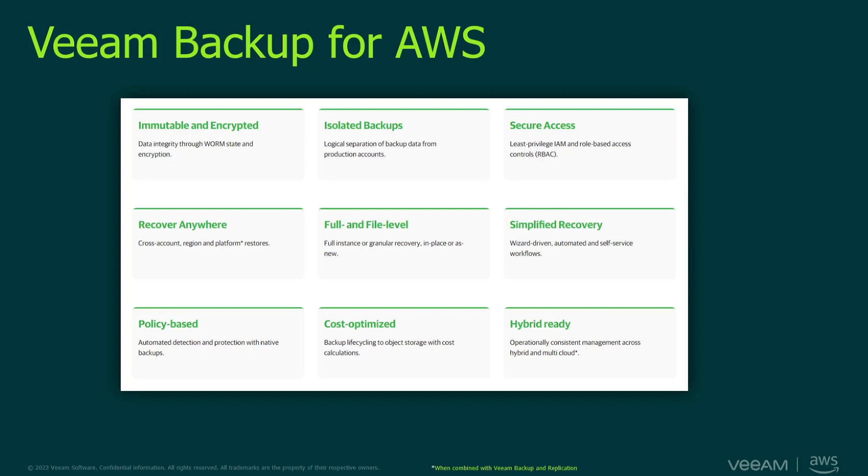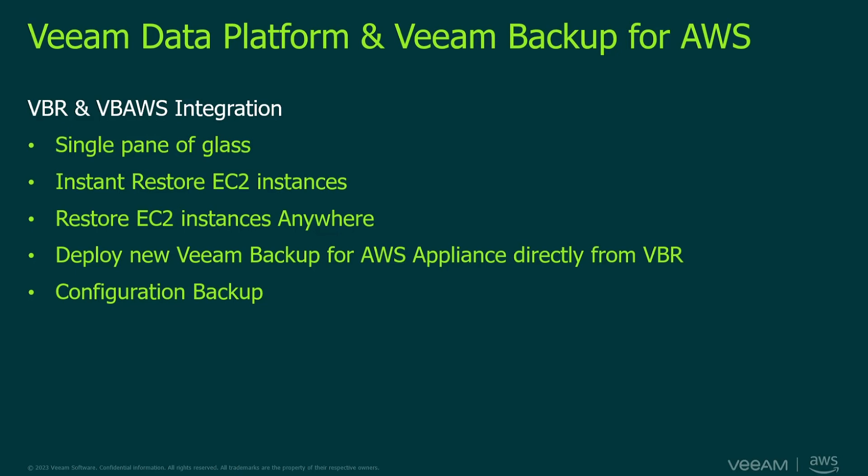Connecting Veeam Backup for AWS with Veeam Backup and Replication makes it easy to control your hybrid environment from a single pane of glass. It means that you can see your replications and your backups running in Veeam Backup for AWS from your VBR console. You have the ability to restore instances and even deploy new Veeam Backup for AWS appliances from the VBR console. Also, this connection gives the ability to centralize backup configuration into one platform, another way of simplifying the management of your backup environment.